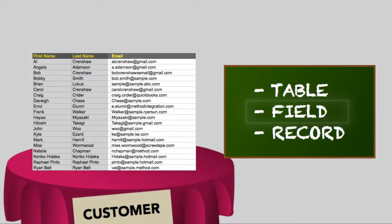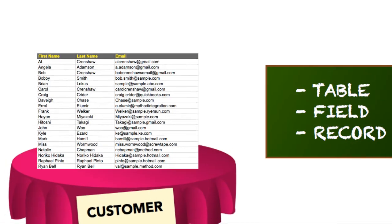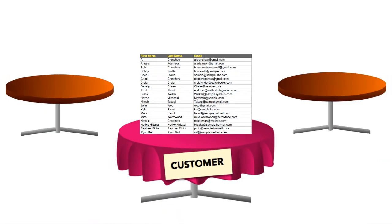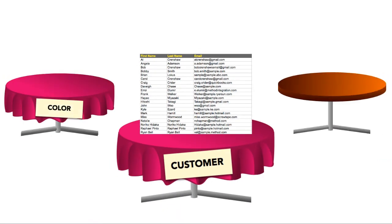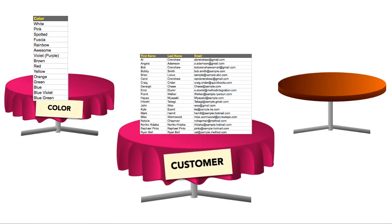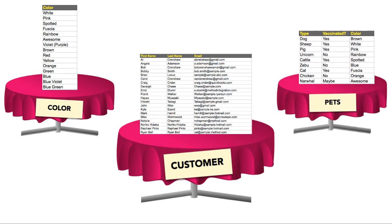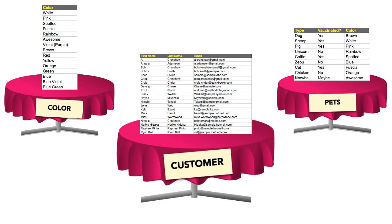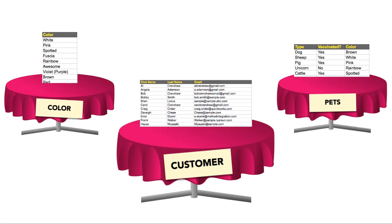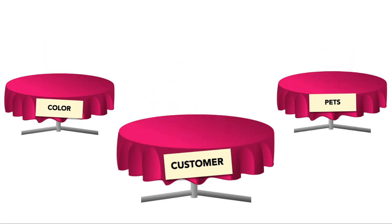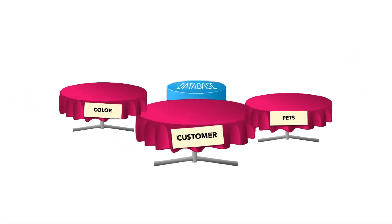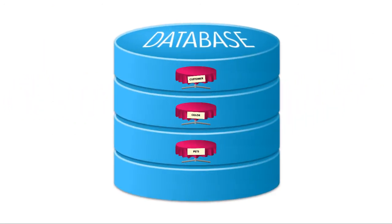Of course you can make more than one table with as many fields as you want. I could make a table to store color and it has one field — the color. And I can make a pet table and maybe I'll keep track of the type, vaccination, and color. And all these tables? They will be in one database to rule them all.